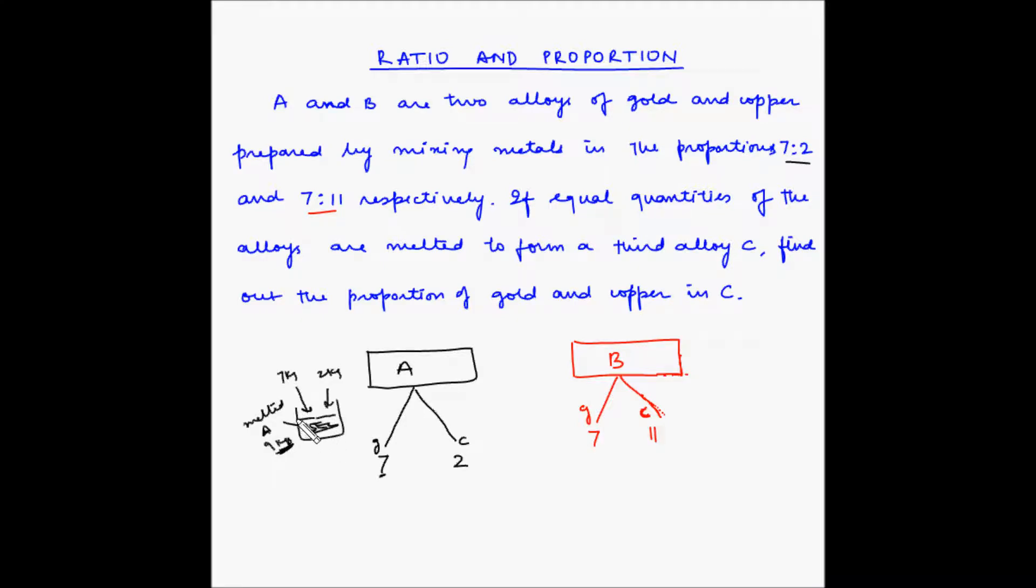Whatever amount of A you are taking, out of that 7 by 9 - why 9? Because the total 7 plus 2 is 9. If we divide the amount of A into 9 equal parts, then 7 parts is gold and 2 parts is copper. So if you take any amount of A, 7 out of 9 parts is gold and 2 out of 9 parts is copper.